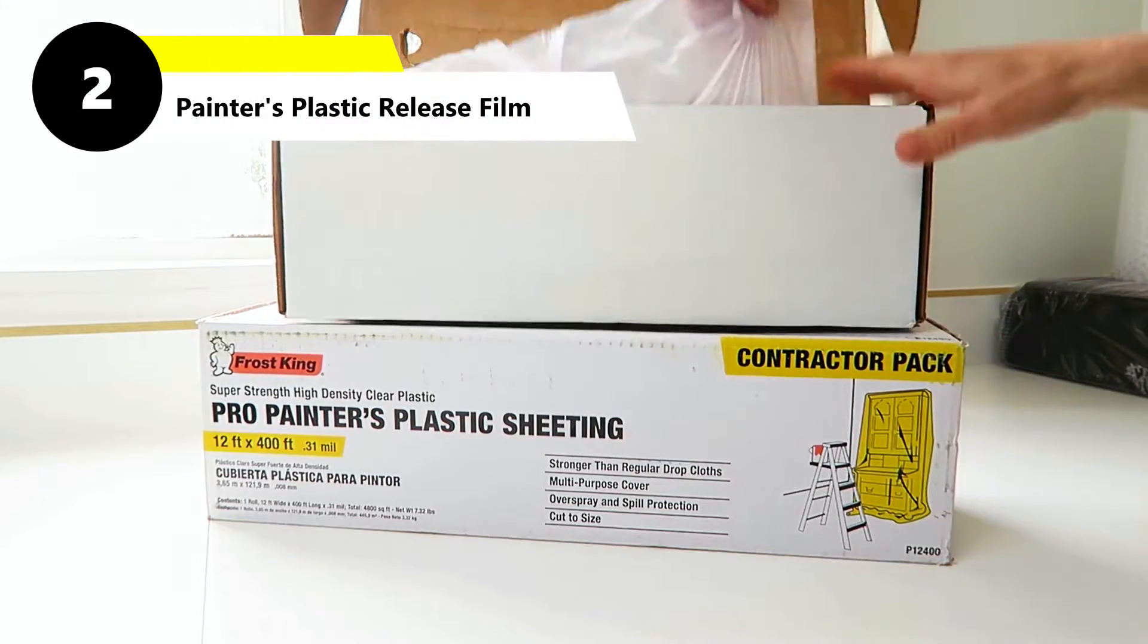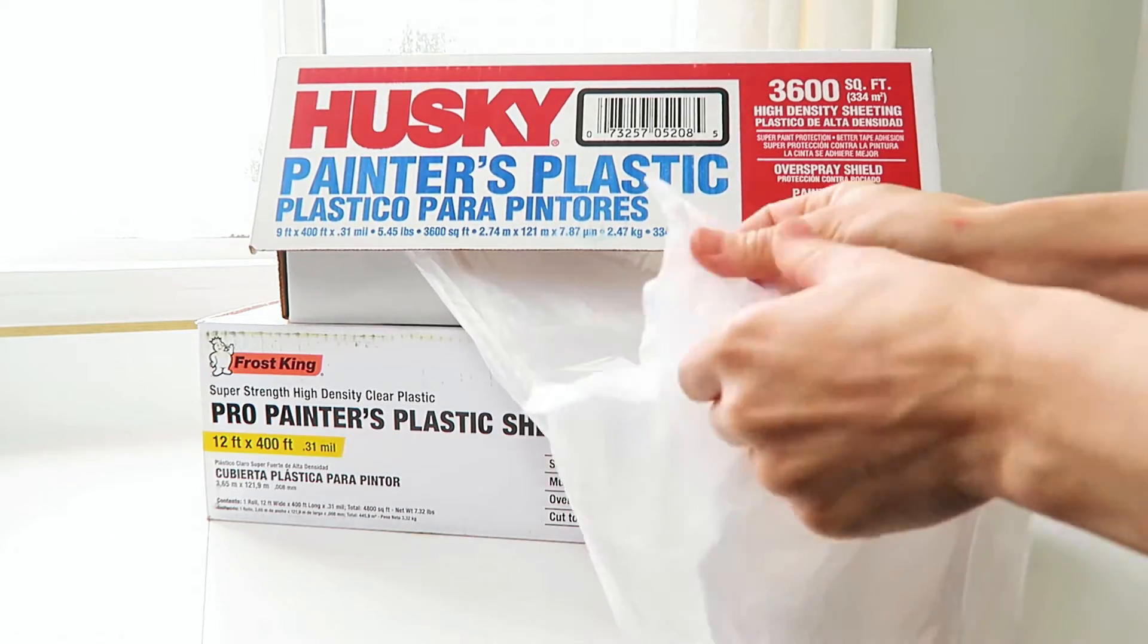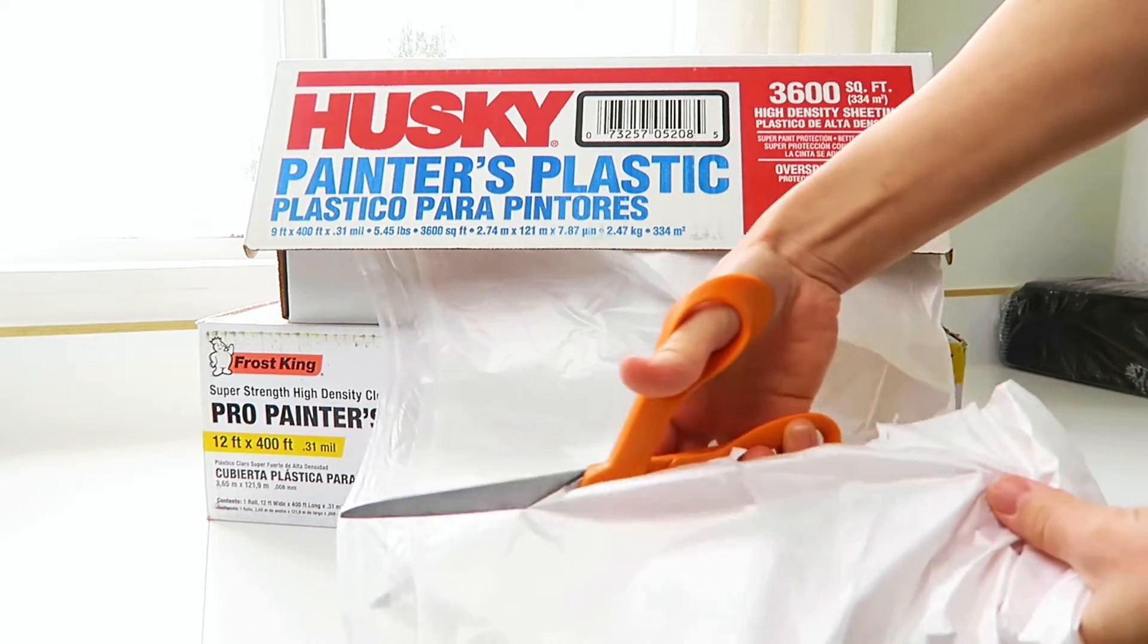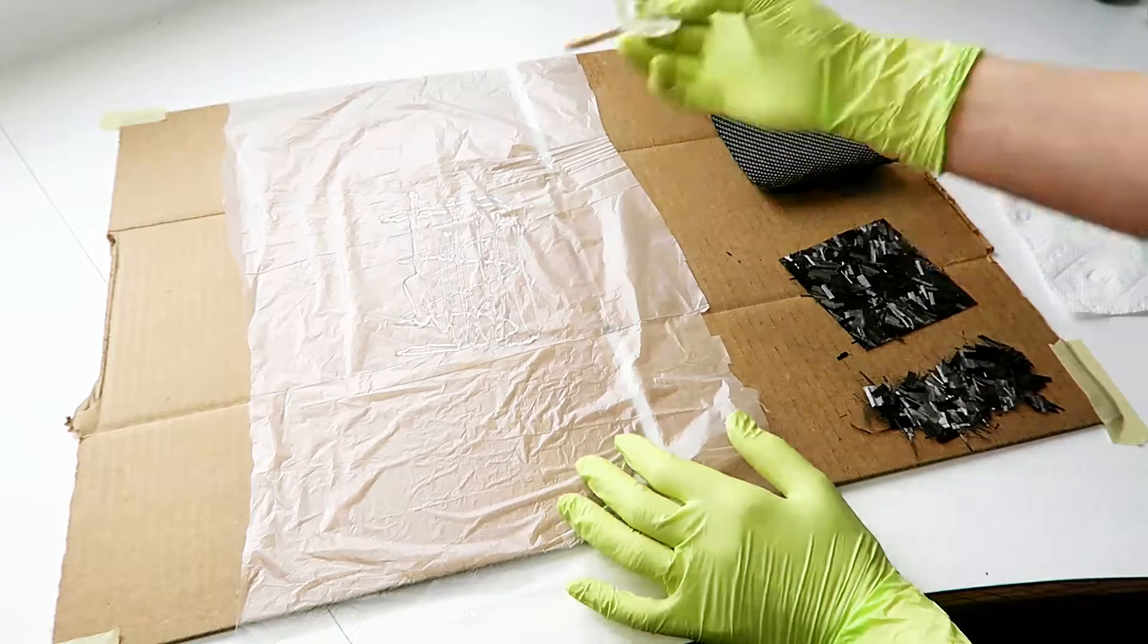Tip 2: Use painter's plastic as a release film. This is the 0.31mm super thin kind which costs cents on the yard. It works like any other non-porous release material to maintain a resin-rich part, and prevent bagging material from adhering to the carbon fiber.